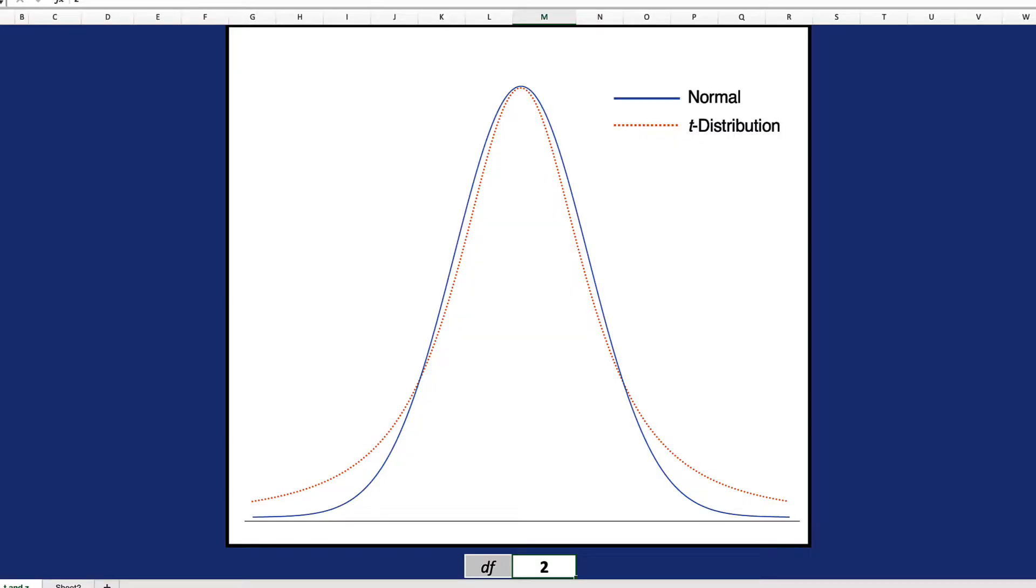Looking at the tails in this distribution with two degrees of freedom, we see that those dotted orange lines are much thicker than a normal distribution. They're pushed out more.